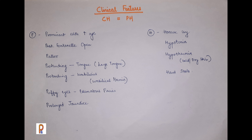Further P features include pallor, protruding tongue due to macroglossia, protruding umbilicus due to umbilical hernia, puffy eyes, and edematous facies. The child may also present with prolonged jaundice — congenital hypothyroidism is one reason for prolonged jaundice alongside UTI and other causes. H features include hoarse cry, hypotonia, hypothermia with cold and dry skin, and hard stool (constipation).